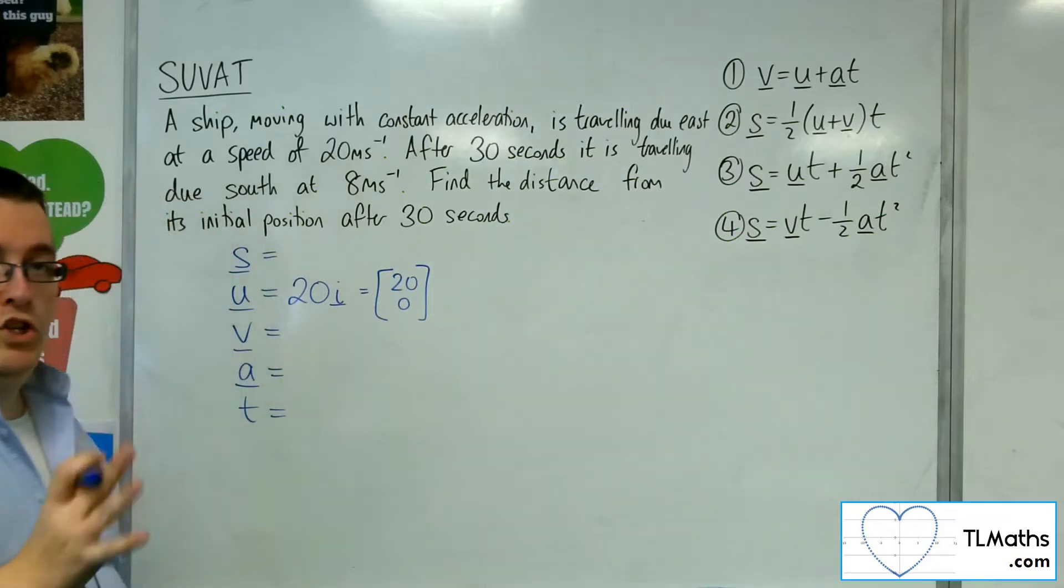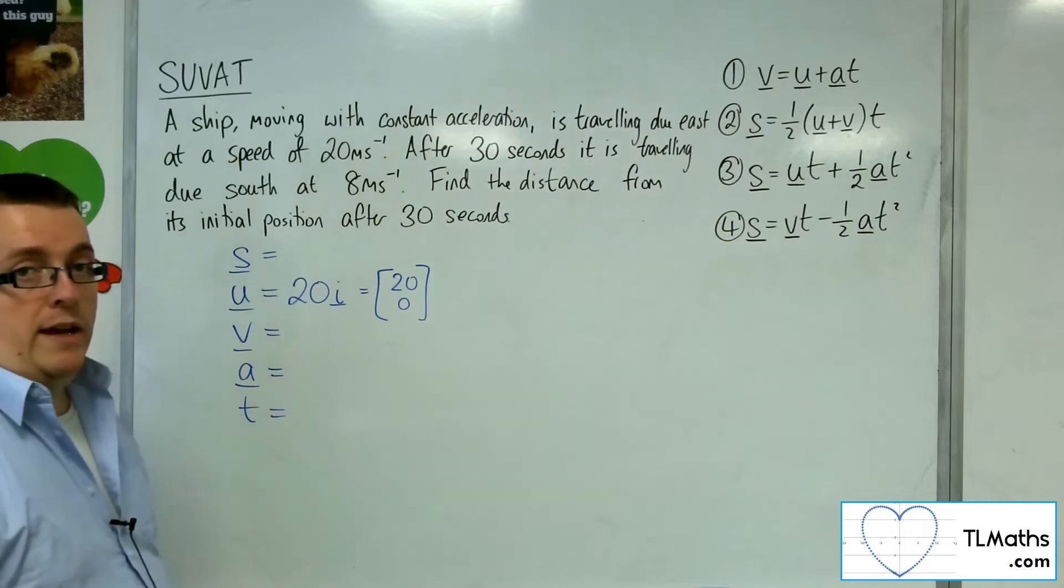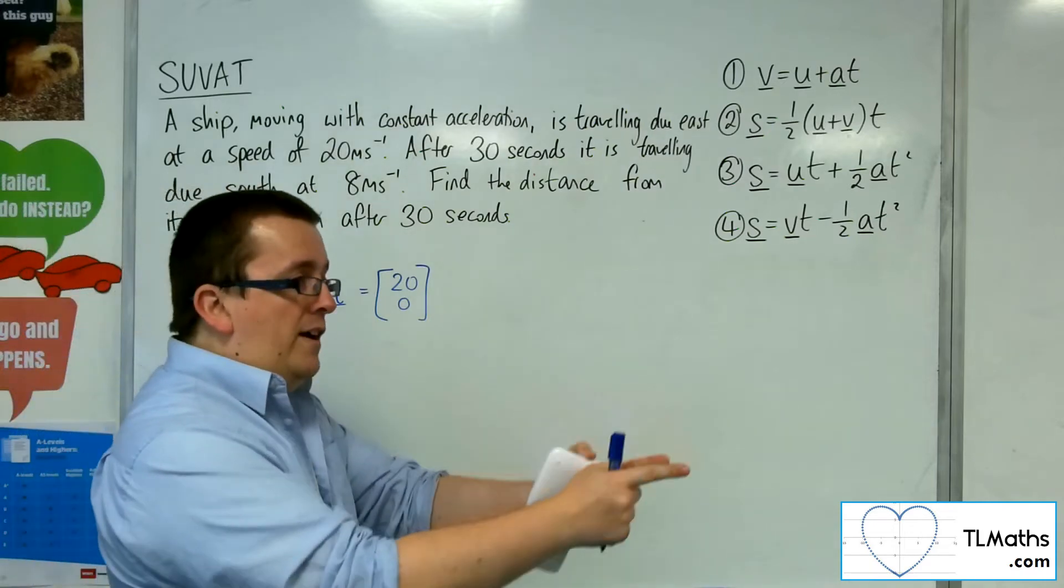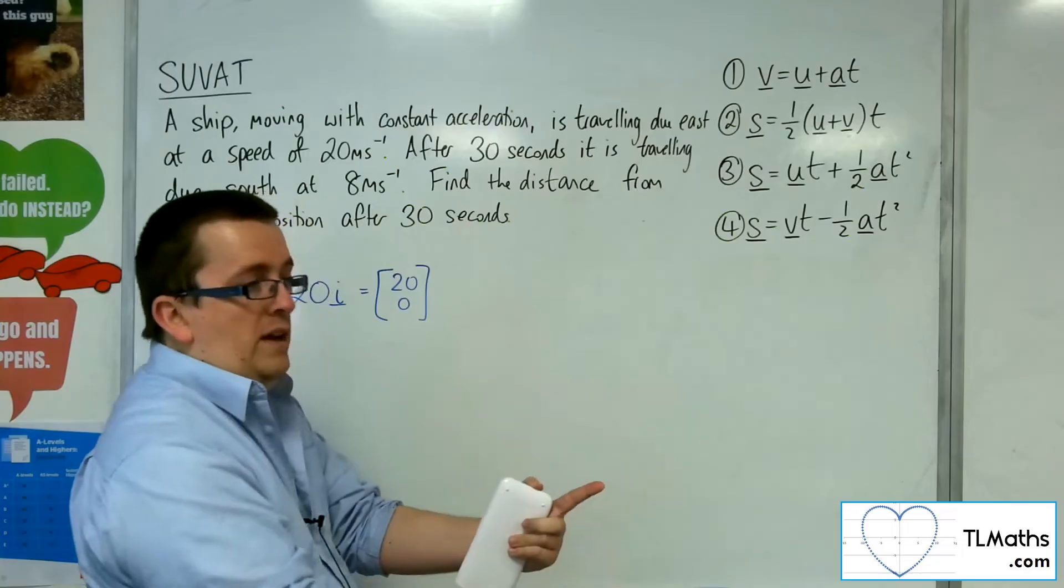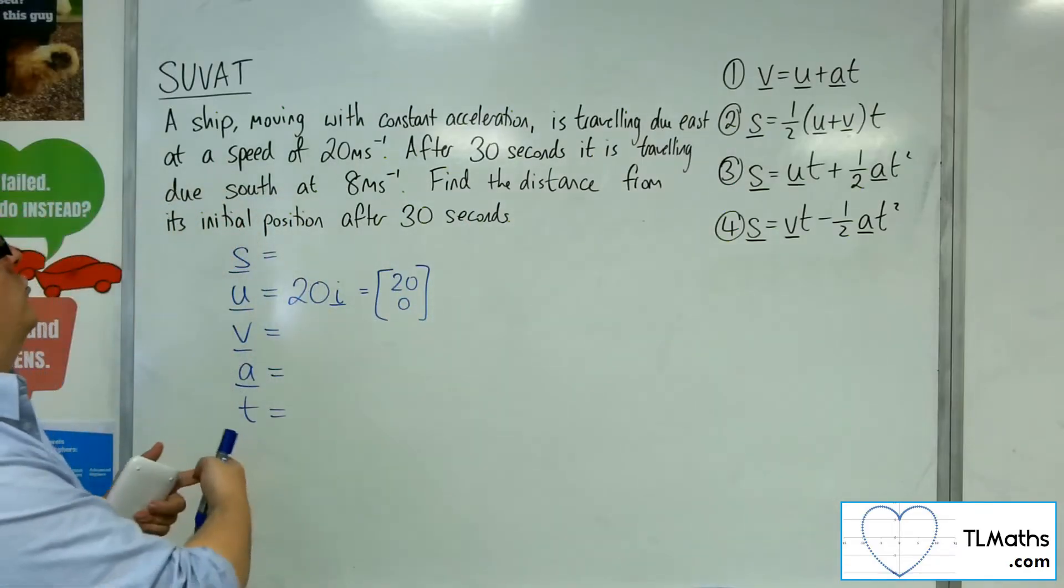It really depends on which you prefer. So it's 20i plus 0j, because we're just travelling 20 meters per second in the i direction and not moving up or down. East going in the positive direction to the right.